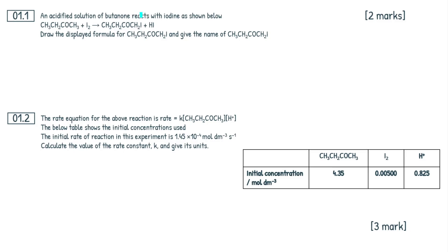An acidified solution of butanone reacts with iodine as shown below. Draw the displayed formula for this and give the name as well. So for organics, not too difficult here. 'Displayed' simply means to display all the bonds — a real simple year one concept. So let's do this. I'm going to draw out my carbons first: 1, 2, 3, 4. Then I'm going to draw out the hydrogens, displaying every single bond.